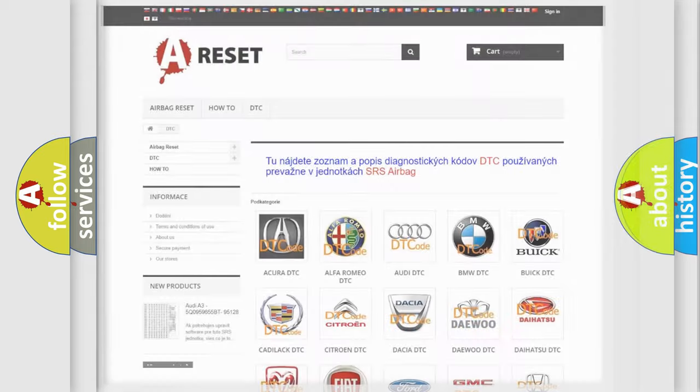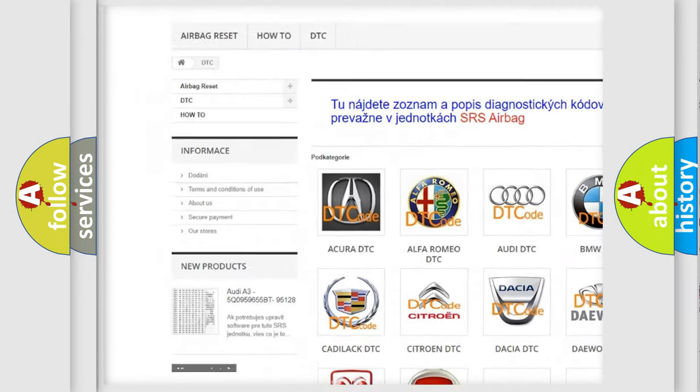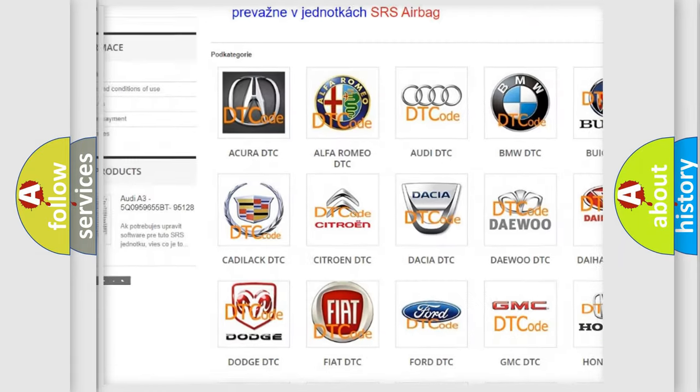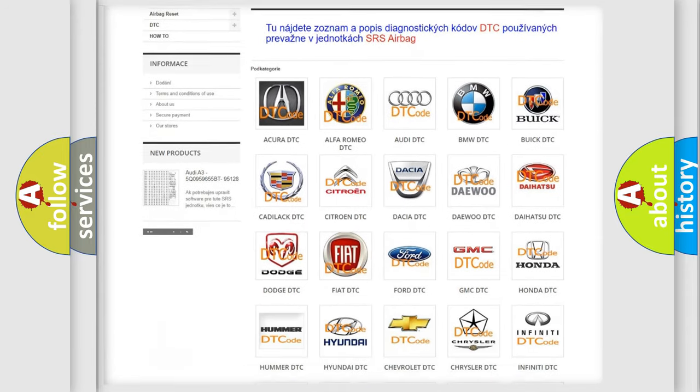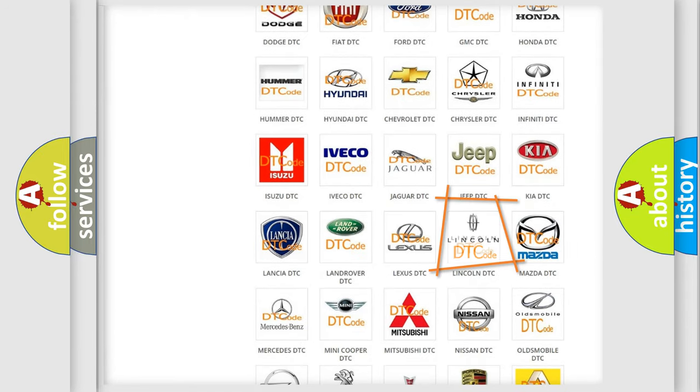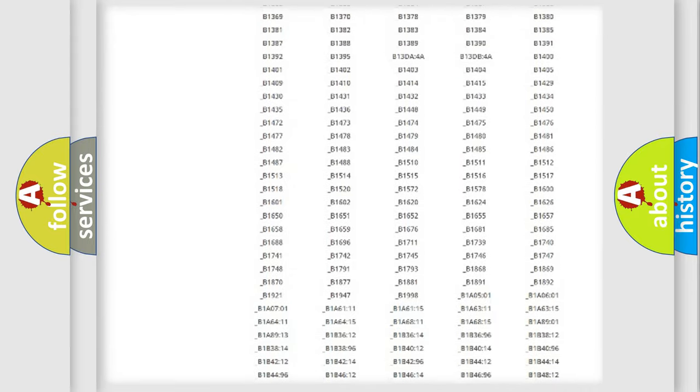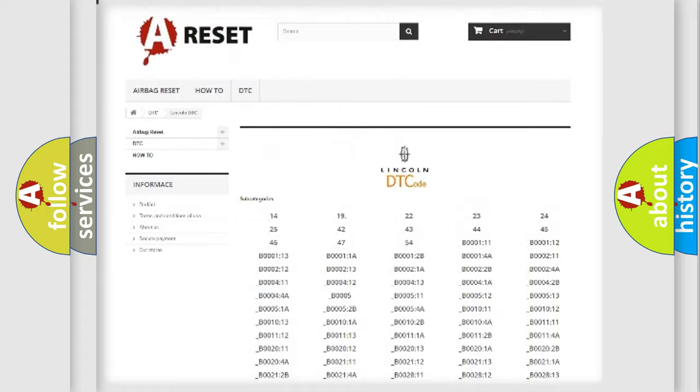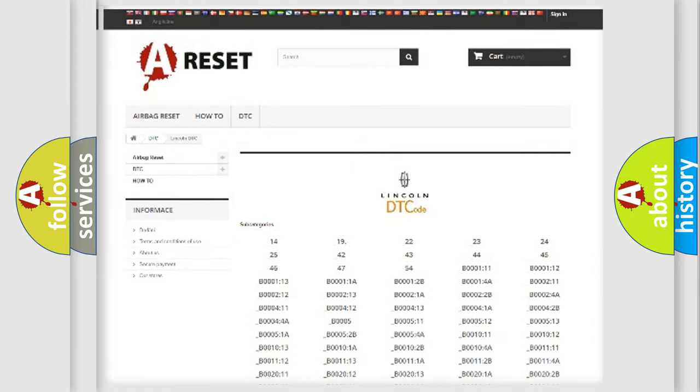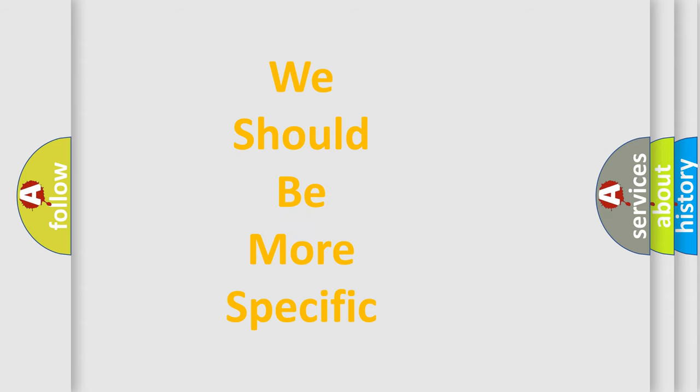Our website airbagreset.sk produces useful videos for you. You do not have to go through the OBD2 protocol anymore to know how to troubleshoot any car breakdown. You will find all the diagnostic codes that can be diagnosed in link and vehicles, also many other useful things. The following demonstration will help you look into the world of software for car control units.